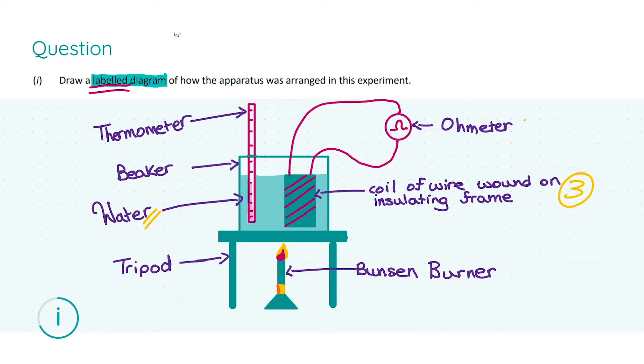You get three marks for the ohmmeter, three marks for the source of heat which is a Bunsen burner in this case, and three marks for the thermometer. If you had no labels, you would automatically lose four out of a possible 12 marks.